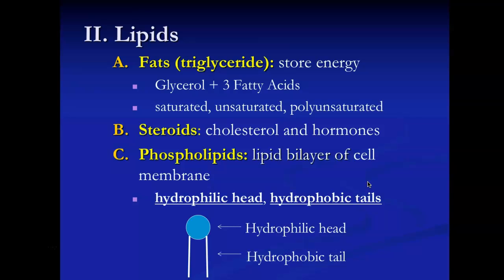The second type of lipid is steroids, which includes cholesterol and certain hormones like cortisol, testosterone, and estrogen. The third type are phospholipids, which make up the lipid bilayer of the cell membrane. I'll go into a little more detail on all three types.